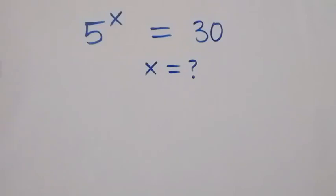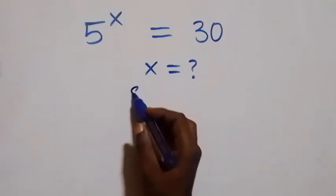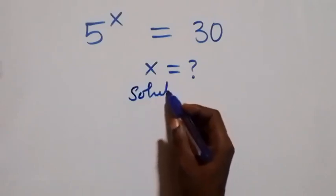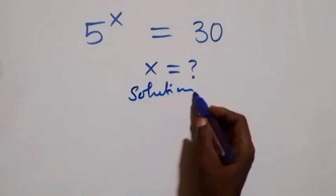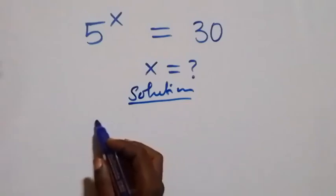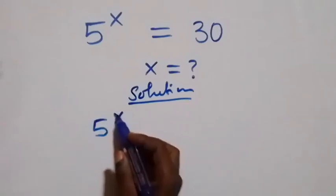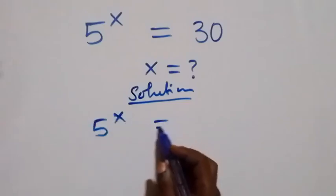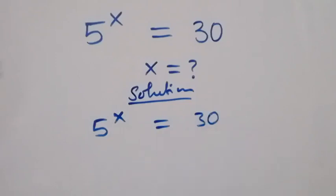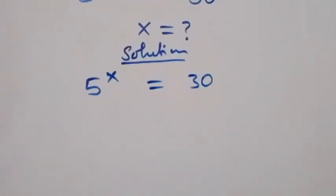Hello, you are welcome. How to solve this nice exponential equation. From what we have here, which is 5 raised to power x equals to 30. Here we can take the log on both sides.